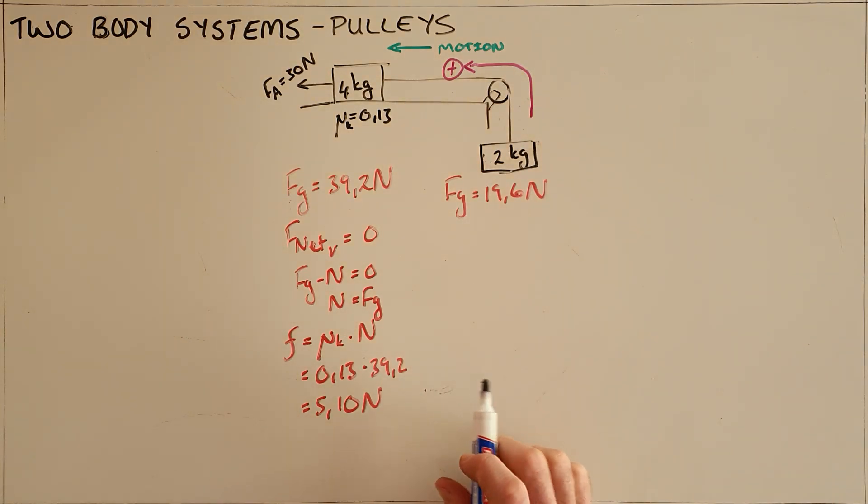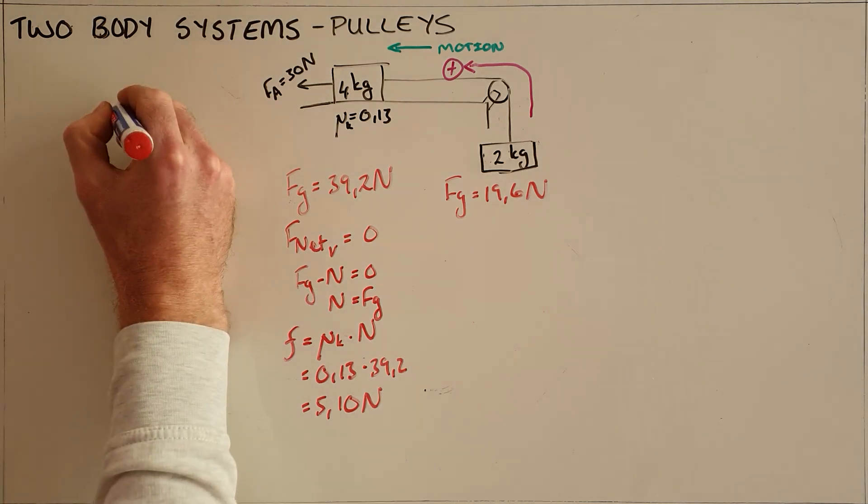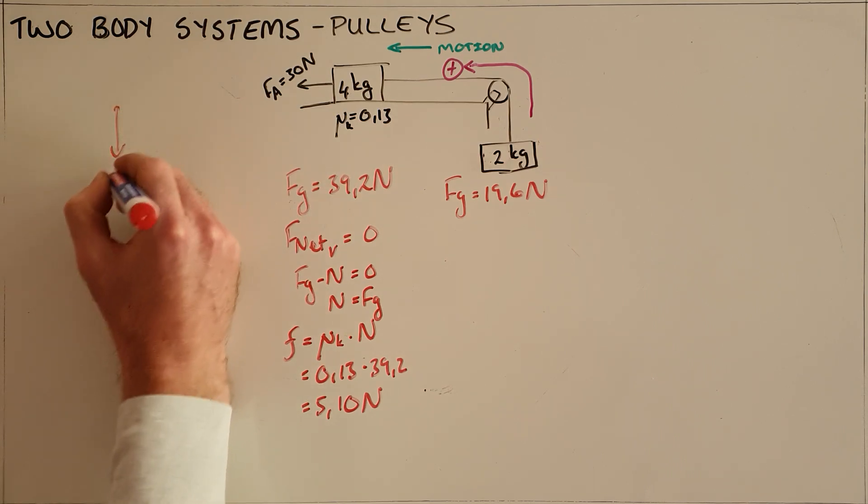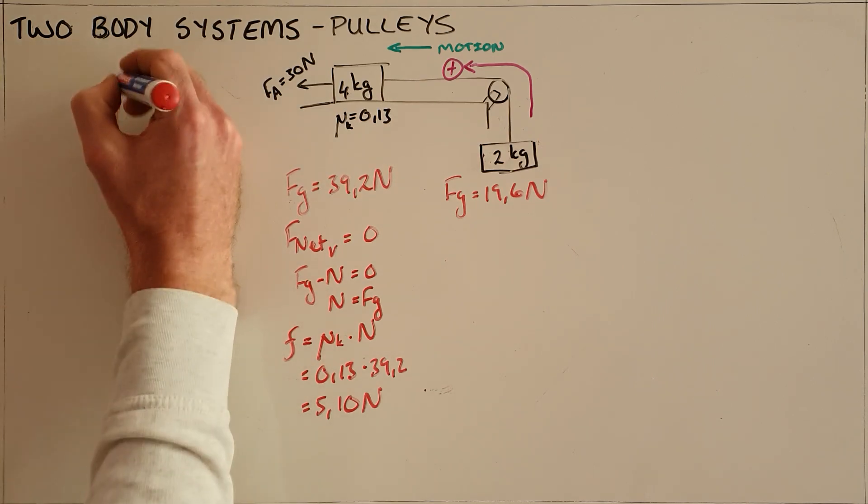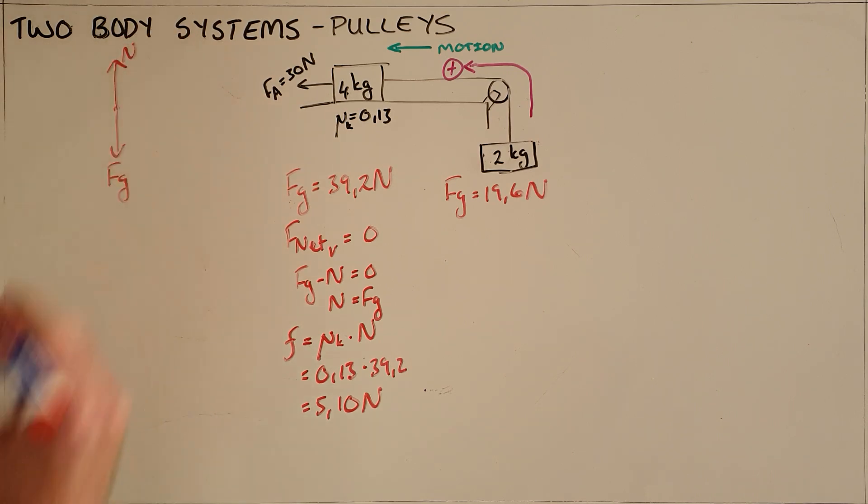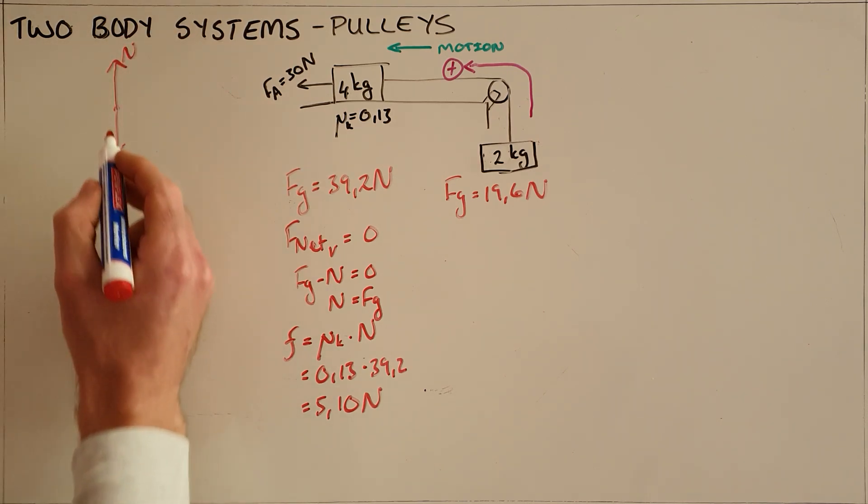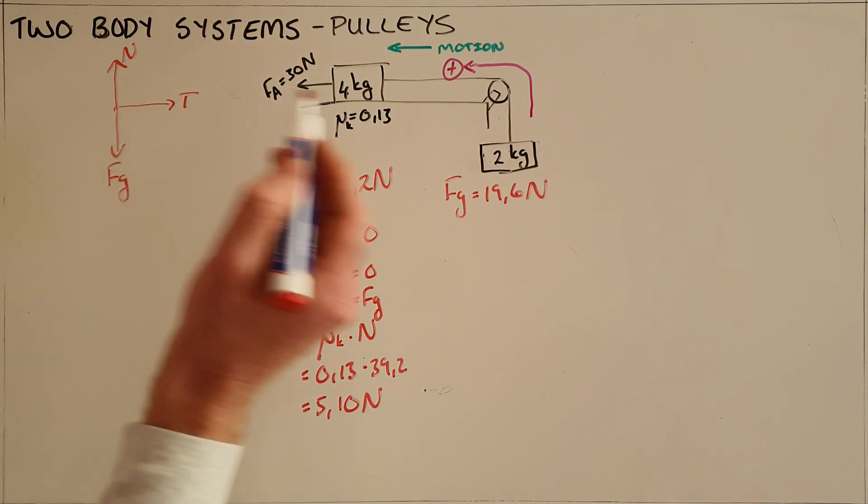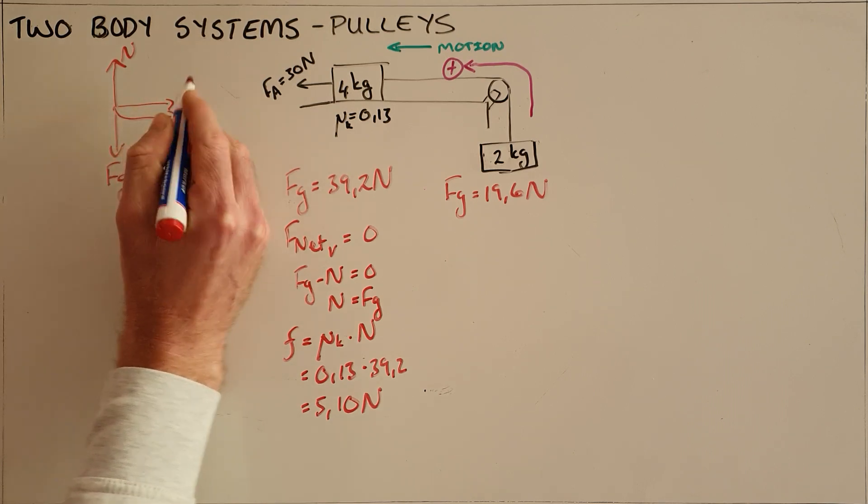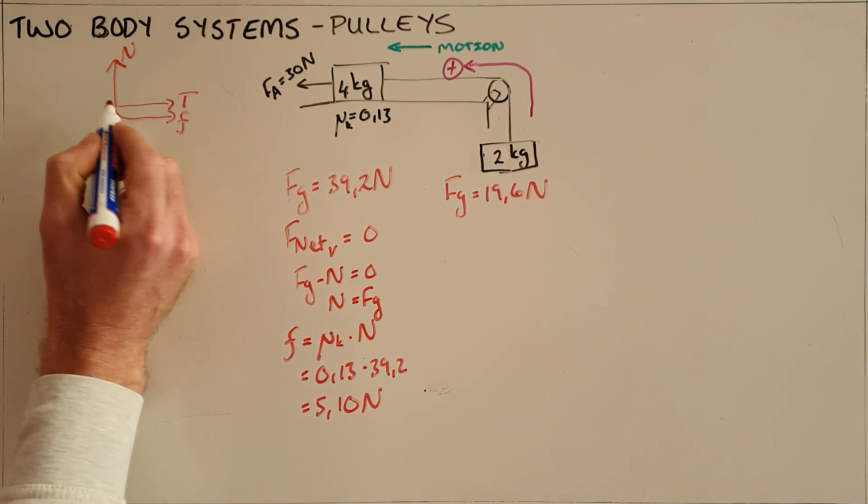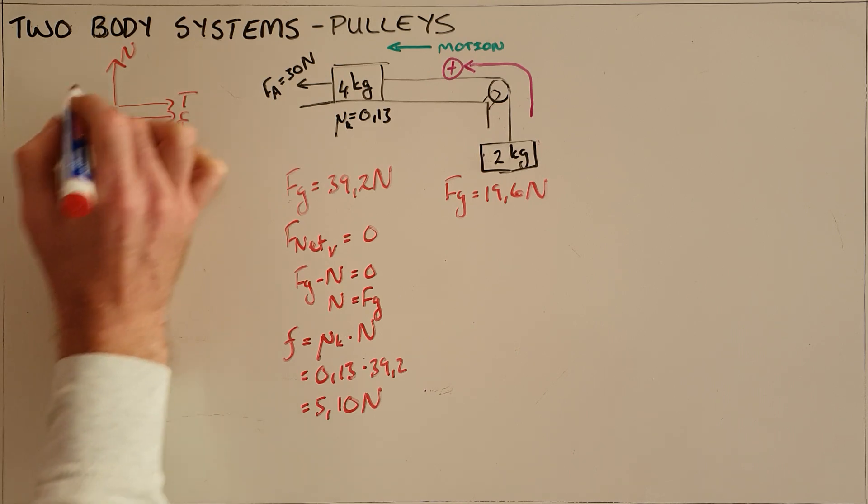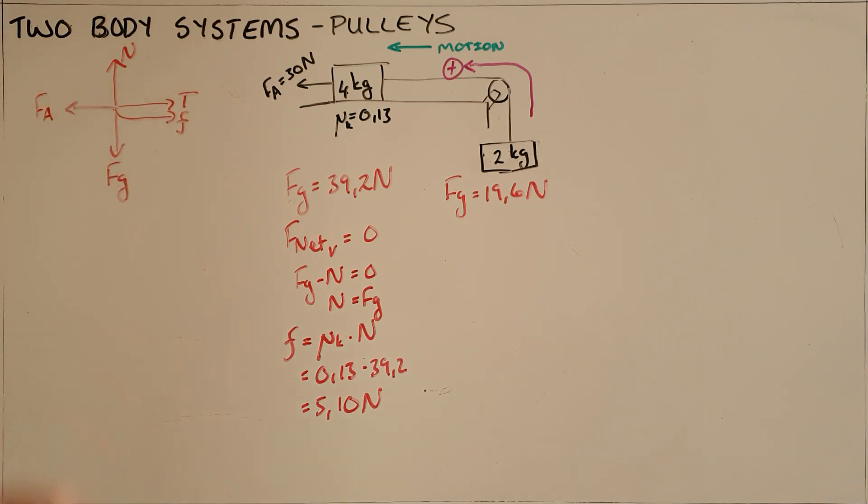The steps we follow here are exactly the same as for any other two-body system. We start by drawing a free body diagram for each object. For the 4 kilogram object, there is a force of gravity pulling it downward. Since it is on a surface, there must be a normal force pushing the object upward. There is a tension force in the rope pulling it back. It's moving to the left, which means there is a kinetic frictional force acting to the right, and the only force pulling it to the left must be our applied force.